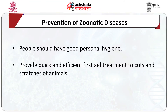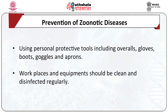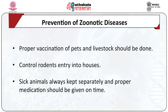Precautions to prevent zoonotic diseases: people should maintain good personal hygiene and provide quick and efficient first aid treatment to cuts and scratches from animals. Use personal protective equipment like overalls, gloves, boots, goggles and aprons. Workplaces and equipment should be cleaned and disinfected regularly. Proper vaccination of pets and livestock should be done. Entry of rodents into houses should be controlled. Sick animals should always be kept separately and proper medication given on time.